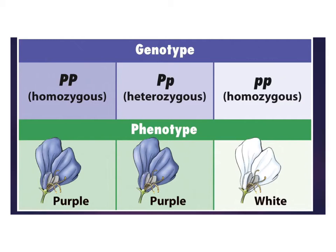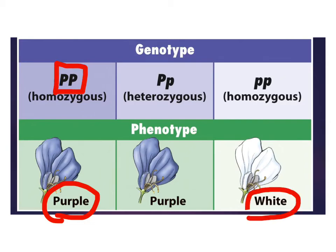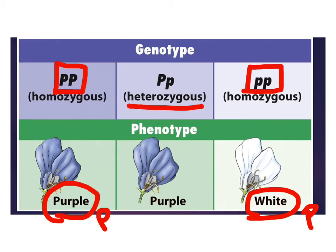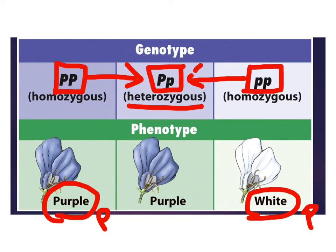Looking back at our pea example, the true-breeding purple flower is represented by two capital P's because it's homozygous dominant. The white flower, also pure breeding, is represented with two lowercase p's — it's homozygous recessive. All of the offspring in the first filial generation were heterozygous, having one capital and one lowercase, because the purple flower donated the capital P and the white flower donated the lowercase p. They all looked purple because they have the capital P, which is the dominant trait that shows.